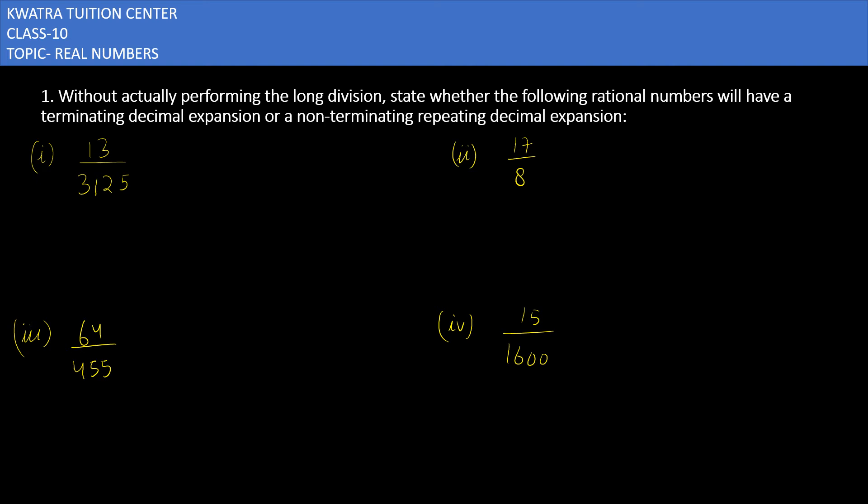Let's start with exercise 1.4 question number one. It says without actually performing the long division, state whether the following rational numbers will have a terminating decimal expansion or non-terminating repeating decimal expansion. First of all, we need to do the long division method. Without it, we need to explain how the expansion will be. So what do we do in this case? We will factorize the denominator.